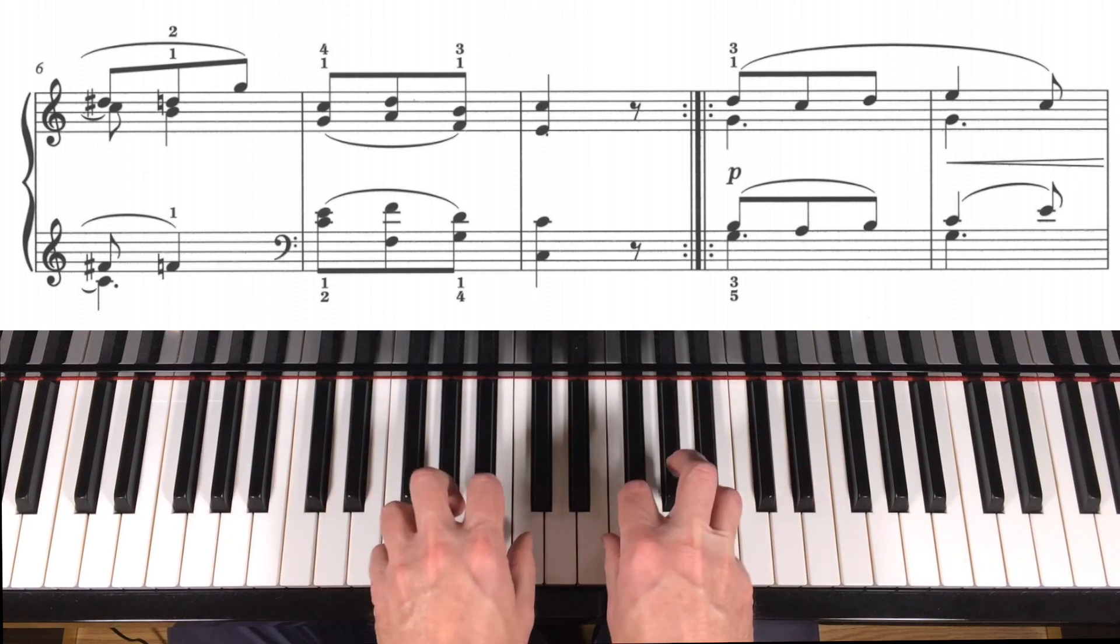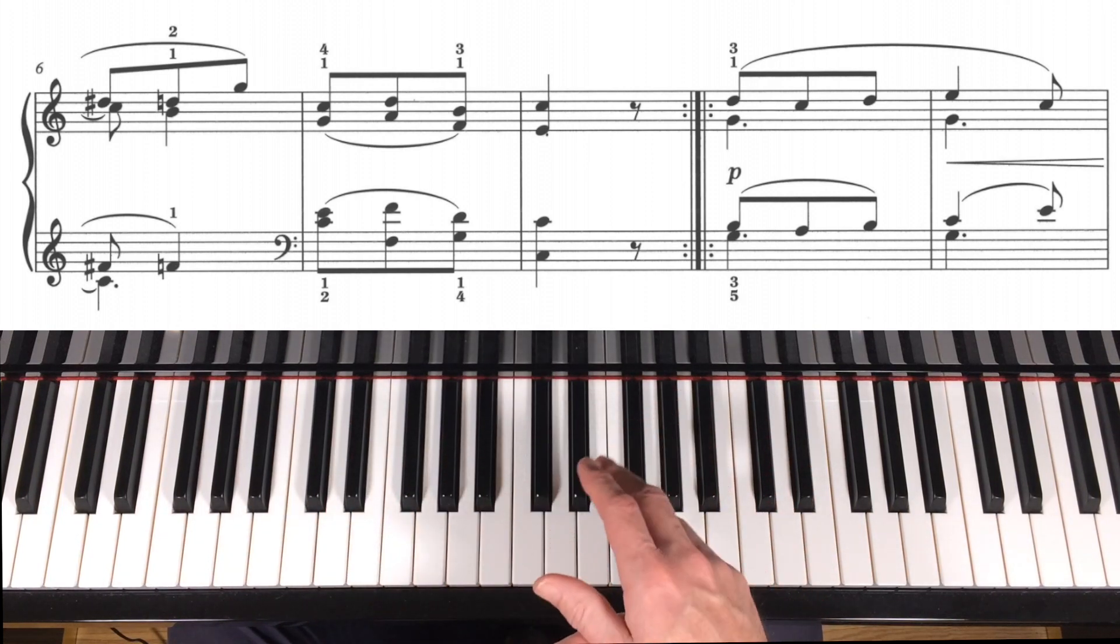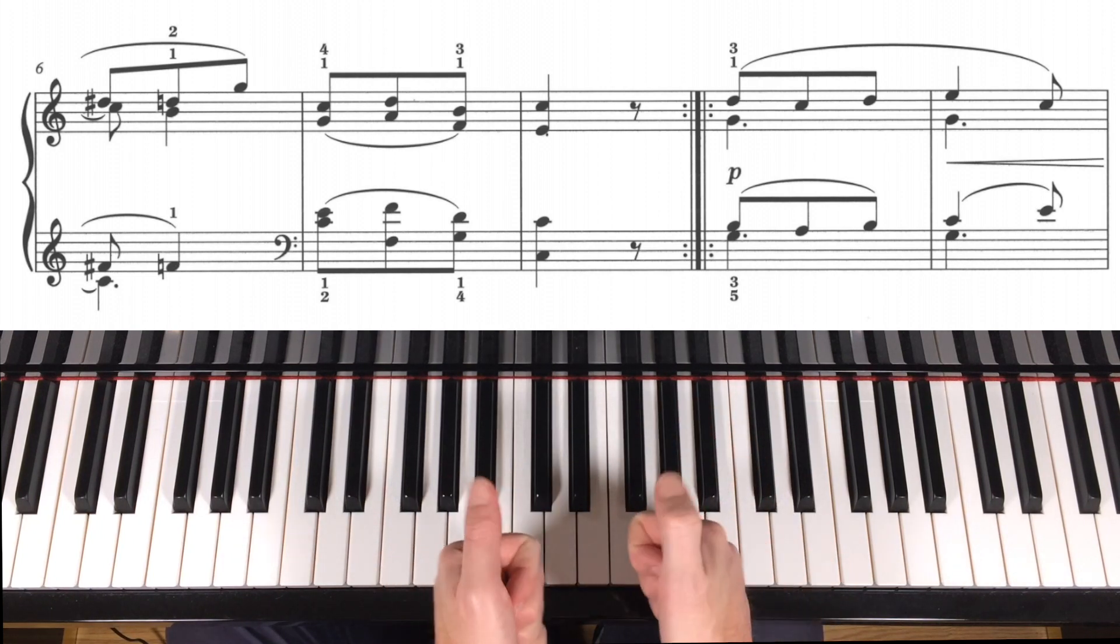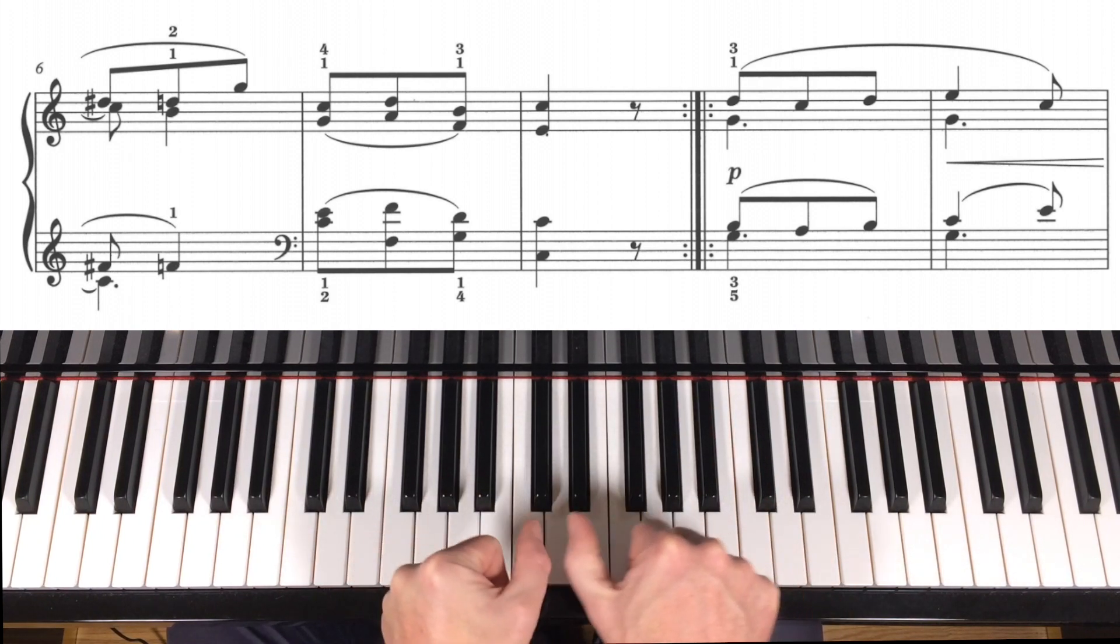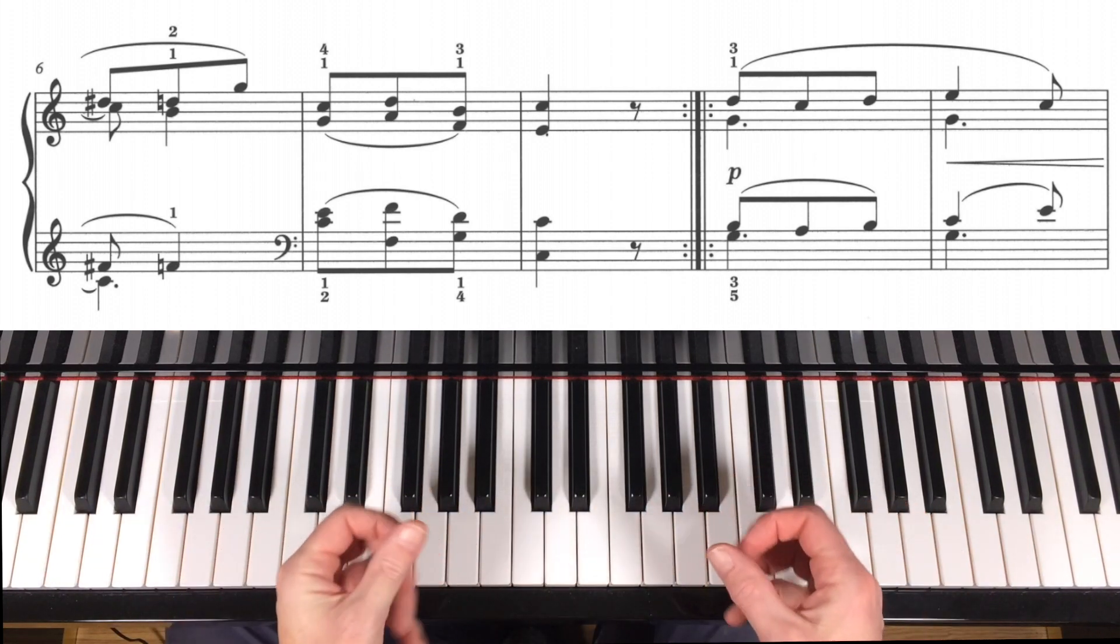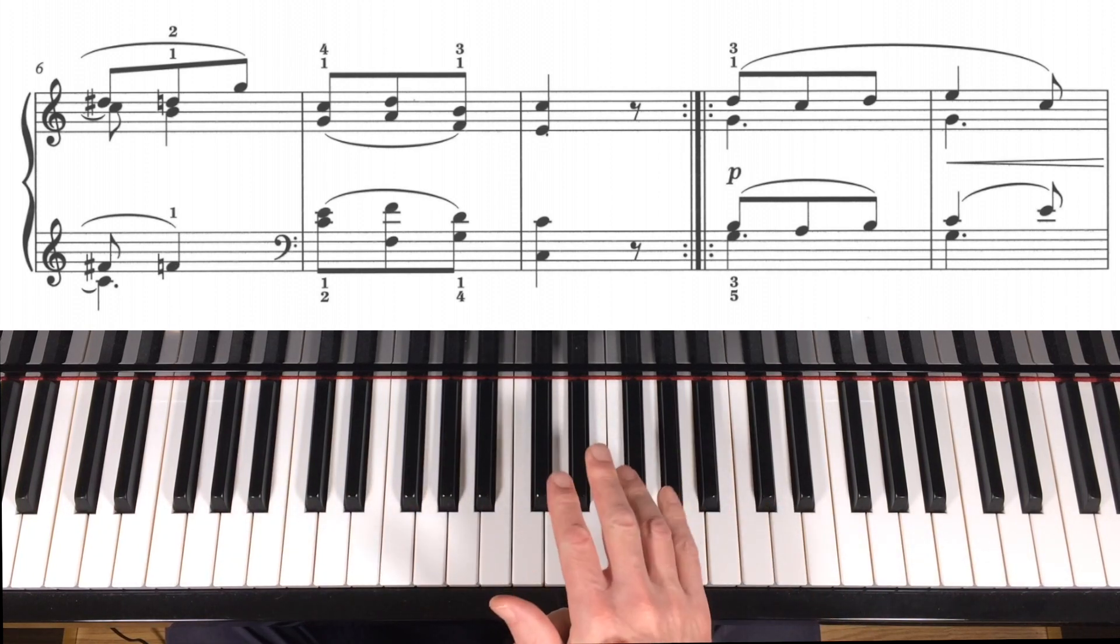Good luck with practicing that. I hope that's been helpful. Basically it's playing legato what it is possible to play legato, whilst the other things - usually the thumb - does its little bit of hopping around in the middle. Take it apart and then gradually put it back together again. Best of luck. Let me know how you get on. Bye bye for now.